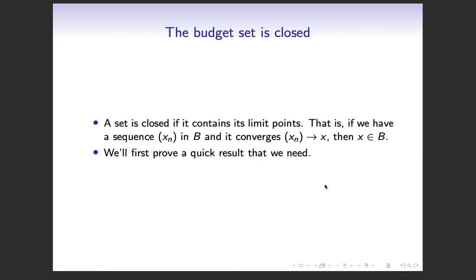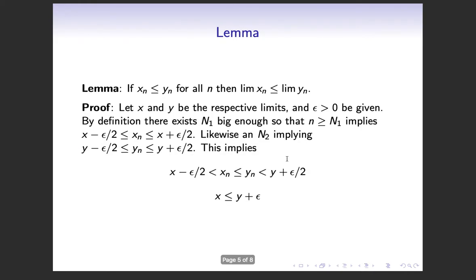The way I'm going to prove it, we first need to prove a little lemma about limits. So what we want to show is that basically that taking the limit of both sides of an inequality is going to preserve the inequality. So if XN is less than YN for all N, then the limit of XN is going to be less than or equal to the limit of YN.